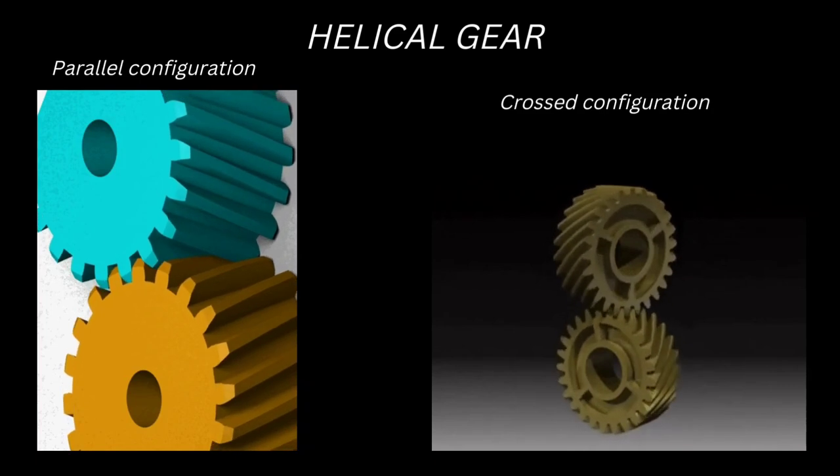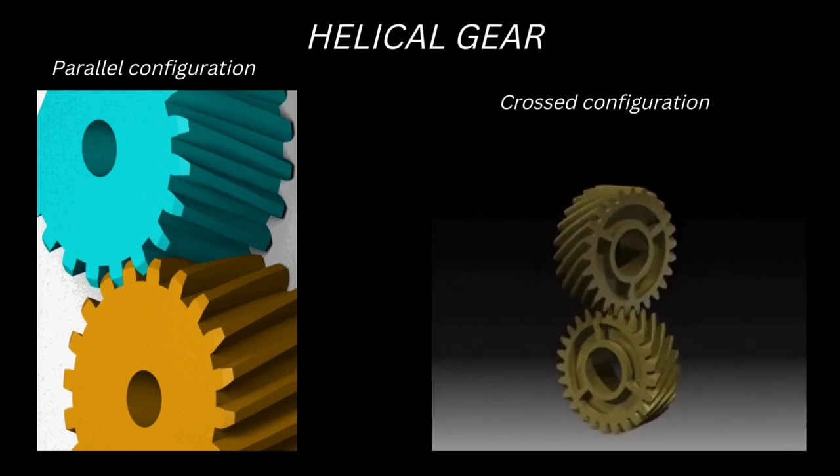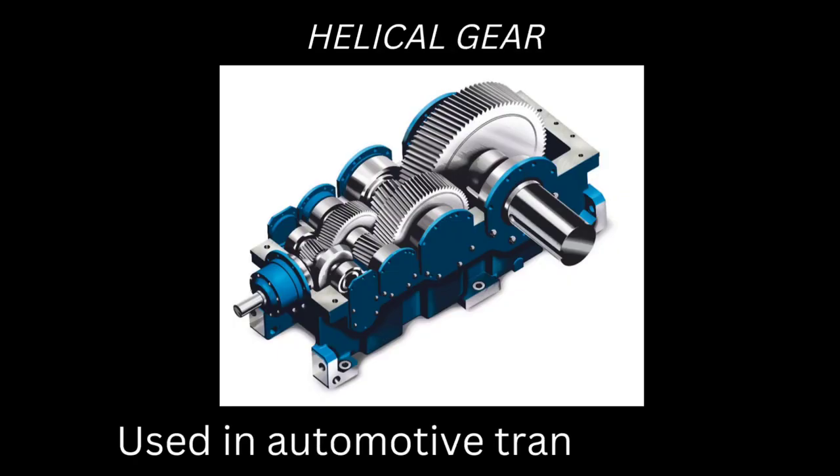Two types of helical gears are parallel configuration and crossed configuration. Helical gears are used in automotive transmissions.